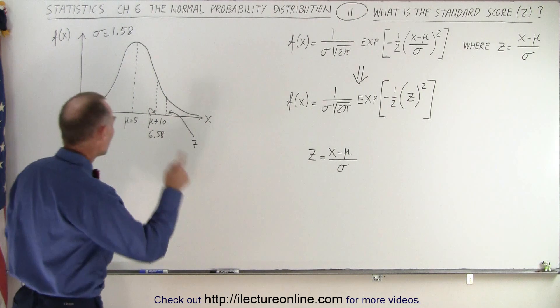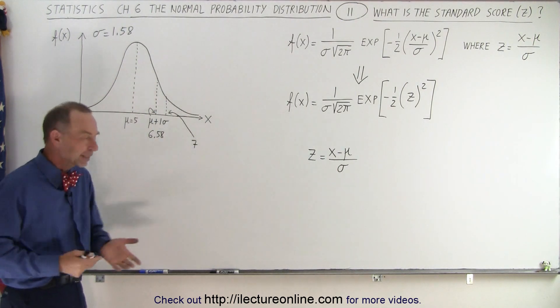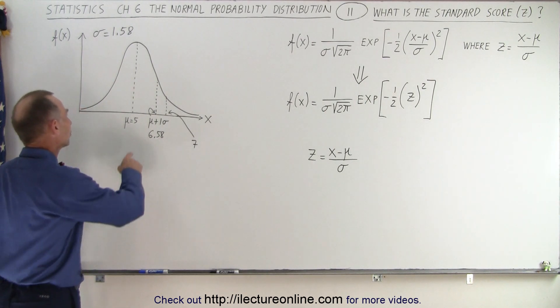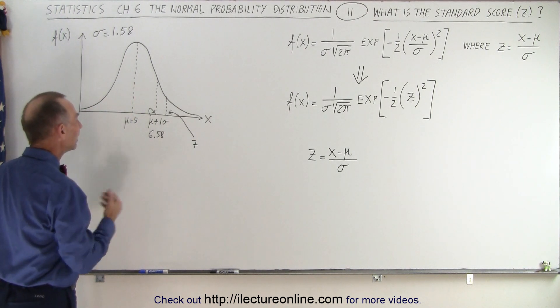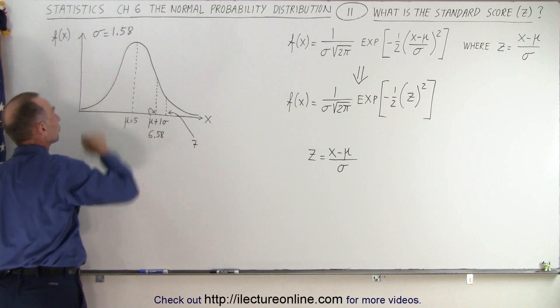Let's go back to our previous example where we're dealing with 100 randomly picked high school students shooting baskets from the free throw line. We determined that the mean or the average number of baskets made was 5. And then we realized that the standard deviation after we calculated was 1.58.